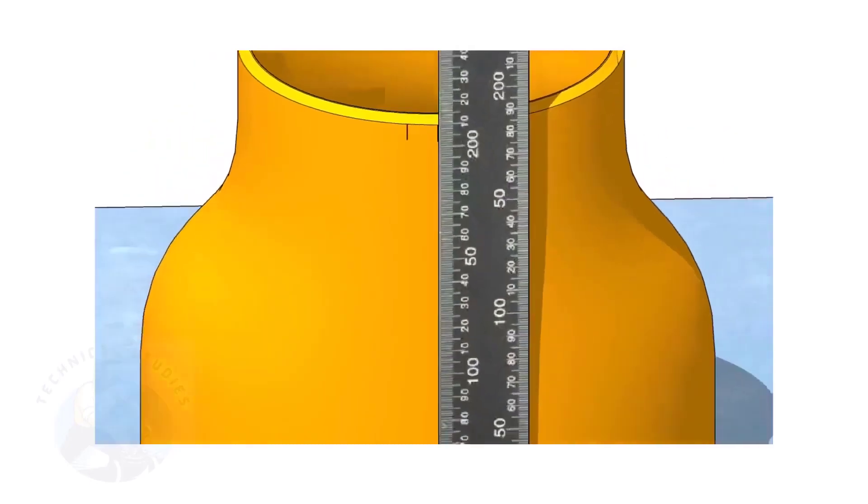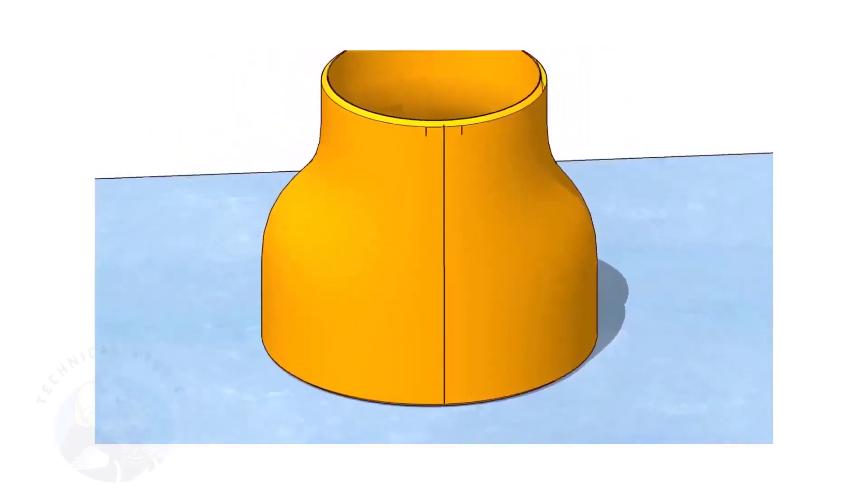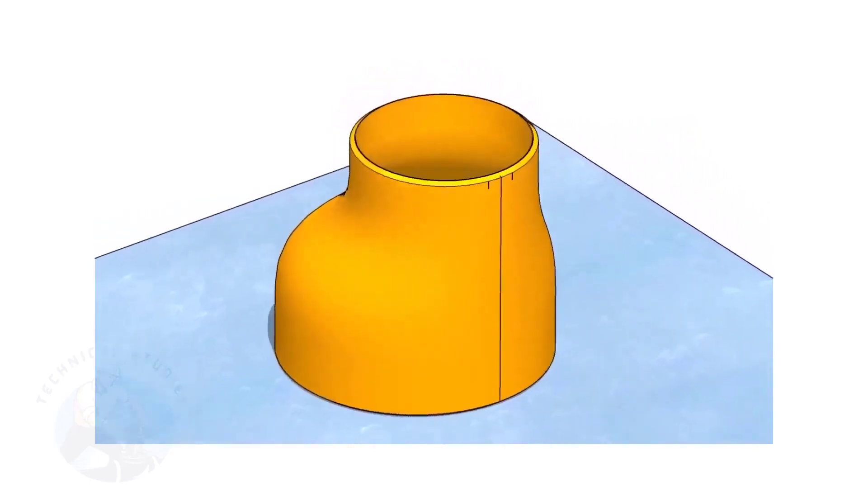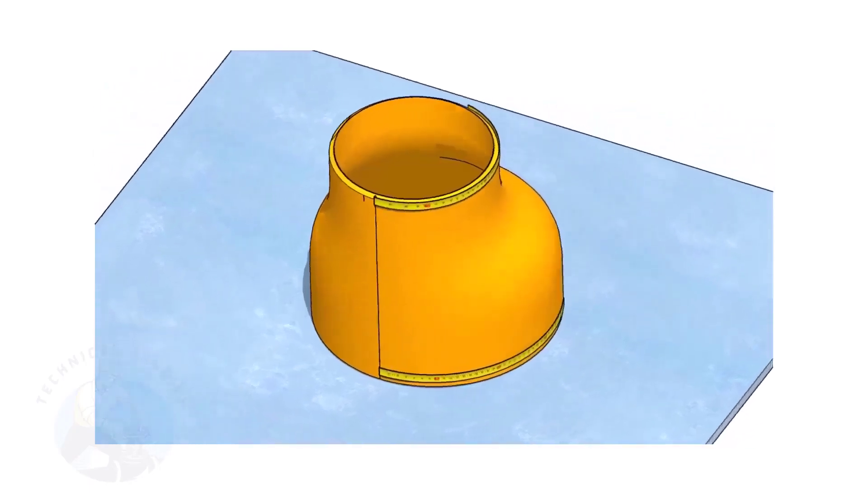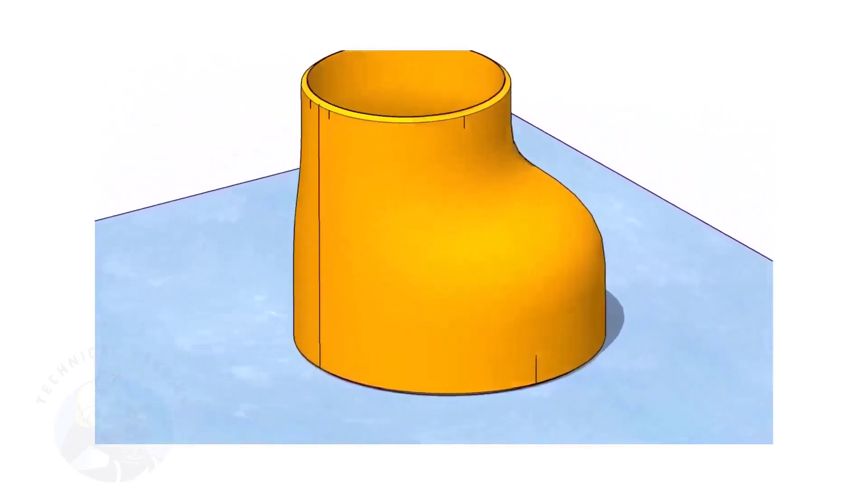In this video, I will show you the method of fitting an eccentric reducer to a pipe that is already fitted to a flange. But this method is applicable for all the fittings. Remember, the sequence of the fit up is more important.